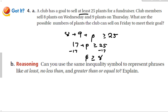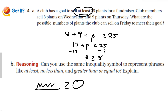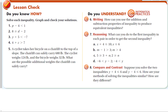Can you use the same inequality symbol to represent the phrases 'at least' or 'no less than' and 'greater than or equal to'? Yes — the greater than or equal to symbol can mean 'at least,' like selling at least 25 plants means the smallest number is 25. 'No less than' means the right-hand side is the smaller side, so greater than or equal to works for both. For less than or equal to, phrases like 'at most' and 'no more than' apply.